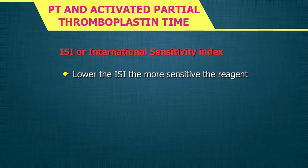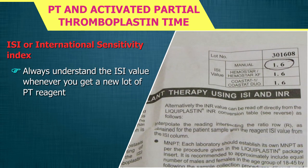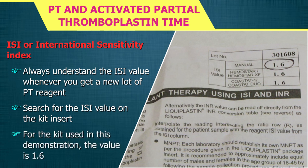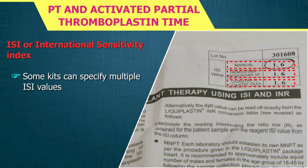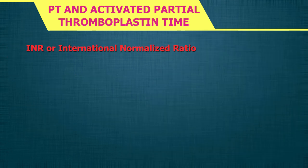The lower the ISI, the more sensitive the reagent. An ISI of 1.8 to 2.4 indicates low sensitivity; 1.4 to 1.8 indicates average sensitivity; and 1.0 to 1.4 indicates high sensitivity. Always check the ISI value whenever you receive a new lot of PT reagent — search for it on the kit insert. For the kit used in this demonstration, the value is 1.6. Some kits specify multiple ISI values because the reagent needs to be calibrated for different equipment.